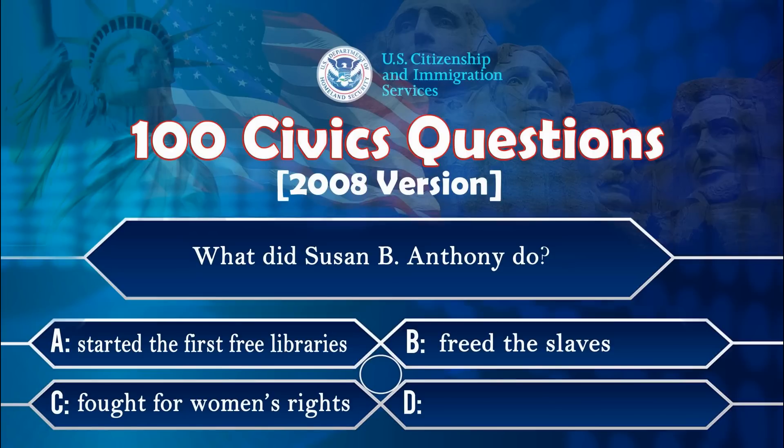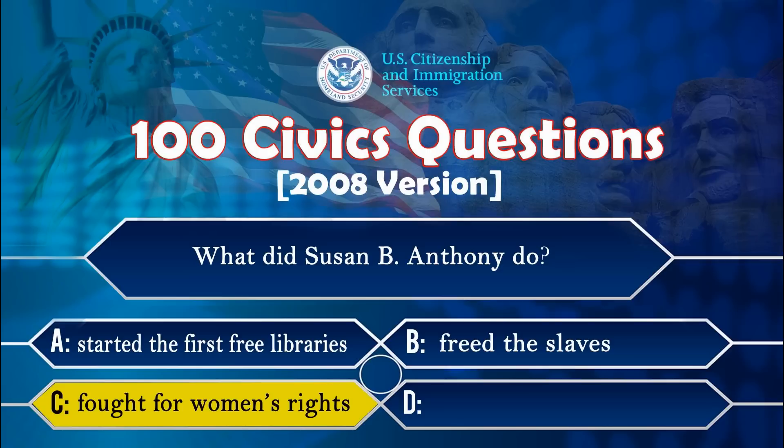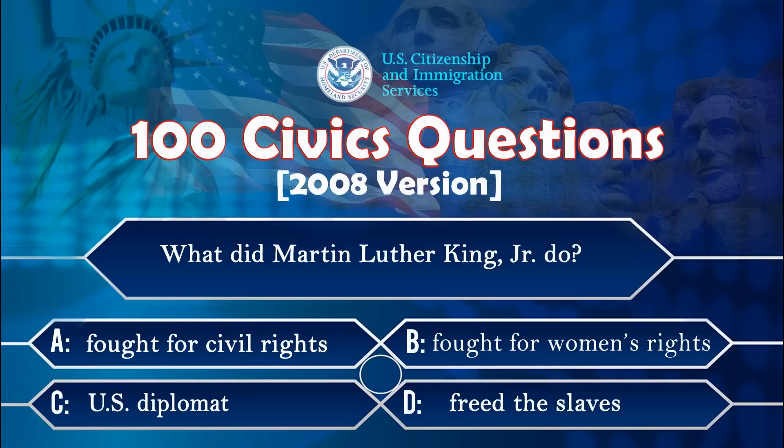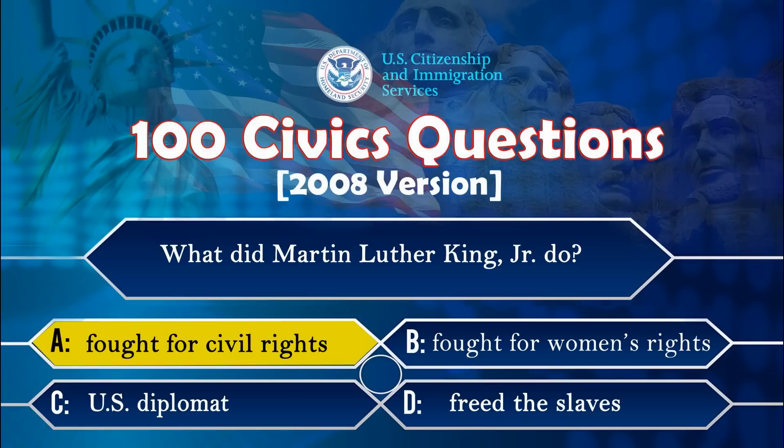What did Susan B. Anthony do? Fought for women's rights. What did Martin Luther King Jr. do? Fought for civil rights.